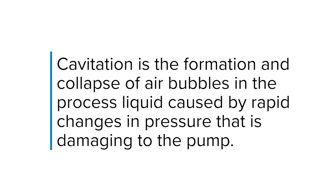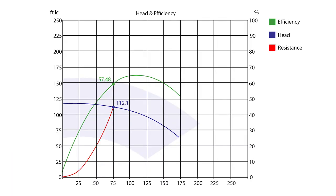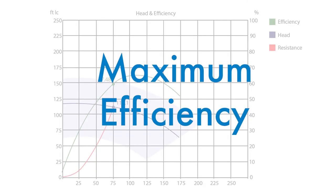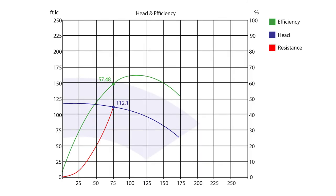Cavitation is the formation and collapse of air bubbles in the processed liquid caused by rapid changes in pressure, which is damaging to the pump. Pump curves also show you where pumps operate at maximum efficiency. In general, the center point of a curve indicates the head and flow coordinates where a pump is operating at maximum efficiency.